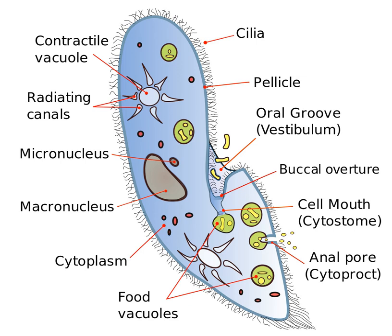An example is Balantidium coli, a ciliate. In other protozoa and in cells from multicellular organisms, phagocytosis takes place at any point on the cell, or feeding takes place by absorption.